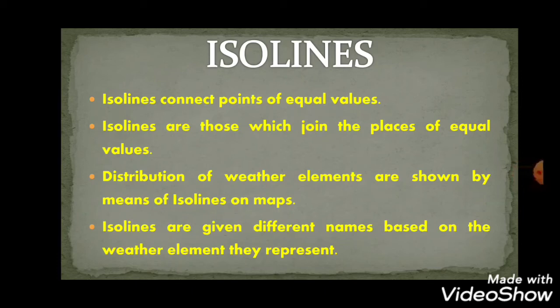Values are connected through isolines. For equal temperature, we use Isotherm. For equal amount of rainfall, we use Isohyet. For air pressure or atmospheric pressure, we use Isobar. Weather elements are distributed and represented on the map using isolines.